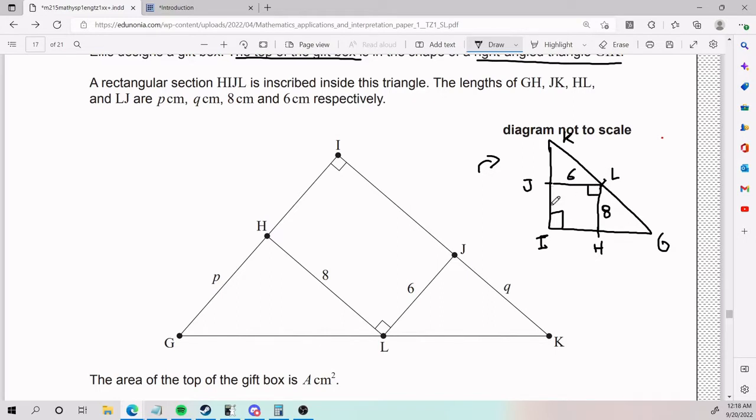Oh, we also know that this guy is P, and that JK is Q. Cool. All right, so we need to find the area of this whole guy here.